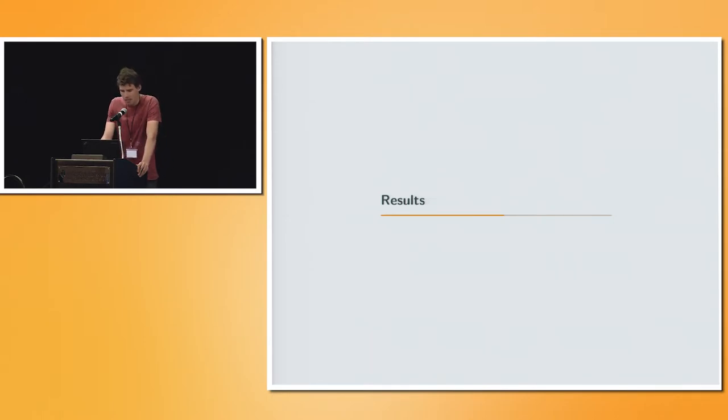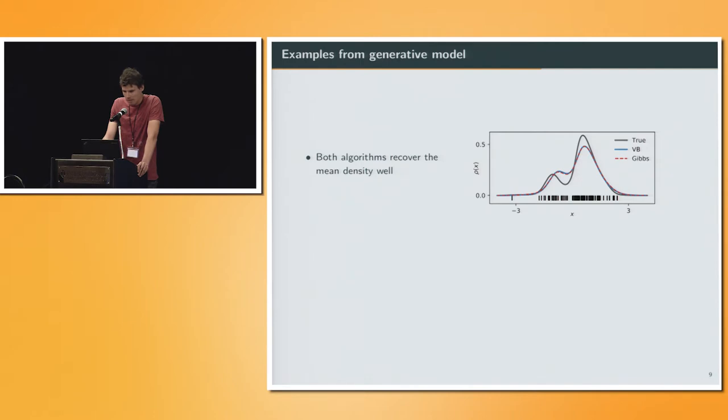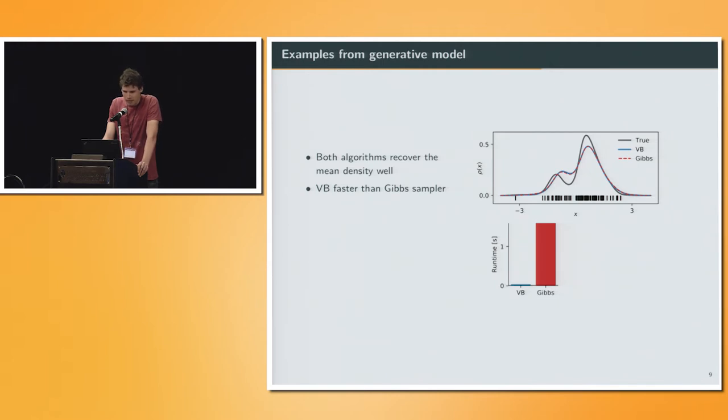So results. Both algorithms recover the density well. Here what you see is the black bars are observations drawn from the generative model, and the black line is the true density. The colored lines, blue and red, are the mean posteriors of the inferred posterior respectively by variational Bayes and Gibbs. As expected, the variational Bayes is much faster than the Gibbs sampler. On the y-axis is the runtime, and we are seeing that the variational Bayes is orders of magnitude faster in this example.